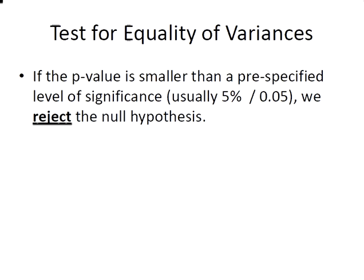Just to be clear about how we would make a decision based on this procedure: if the p-value is smaller than a pre-specified level of significance, which is usually 5% or 0.05, we reject the null hypothesis.